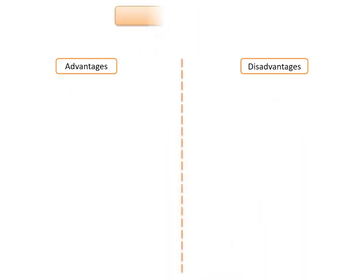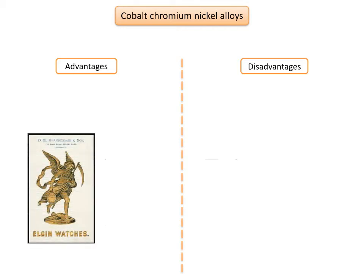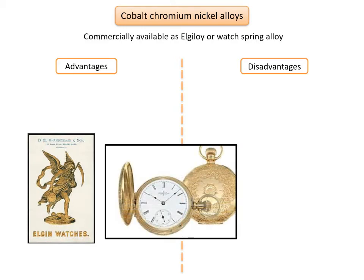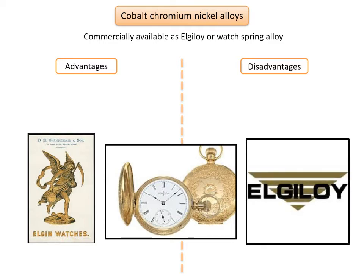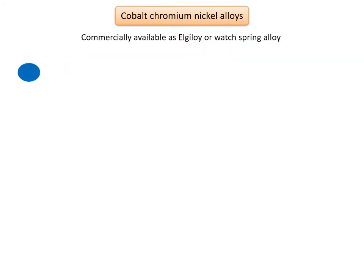Cobalt-chromium-nickel alloys, also called cobalt-chromium alloys or Elgiloy, were originally developed by the Elgin Watch Company of America as a material for the mainspring of watches and were advertised as 'the heart that never breaks.' Developed during the 1950s by the Elgiloy Corporation, the alloy's composition is cobalt 40–45%, chromium 15–22%, with nickel added for strength and ductility. Iron, molybdenum, tungsten, and titanium can also be added to form stable carbides and enhance hardening. Elgiloy wires are available in four tempers based on resilience, color-coded by the manufacturer: soft blue, ductile yellow, semi-resilient green, and resilient red.